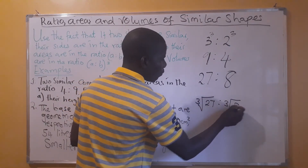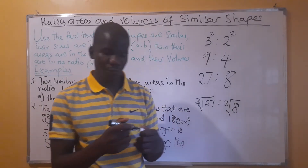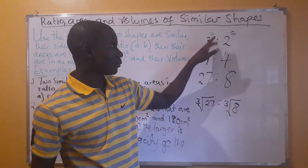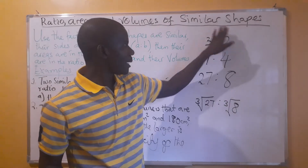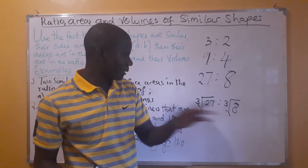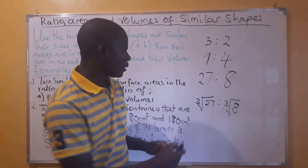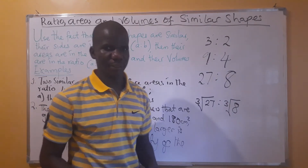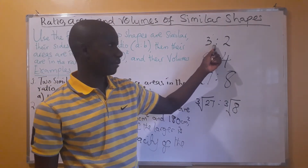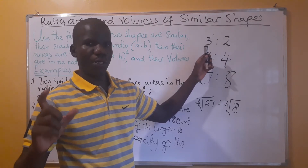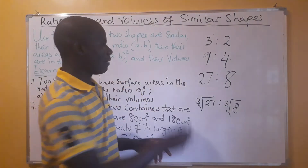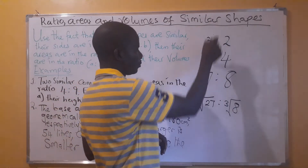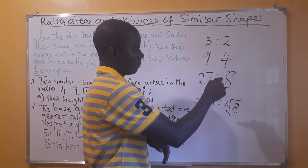The cube root of 27 is 3 — the number you multiply by itself three times to get 27. The cube root of 8 is 2. So we are taken back to the original ratio of the heights of the cones, which is 3 to 2. Then, since the question asks for the ratio of area, we square those values to get 9 to 4.